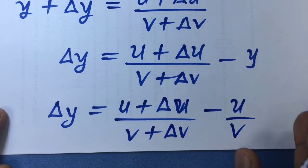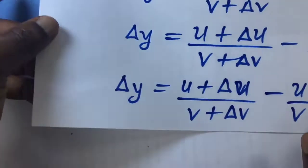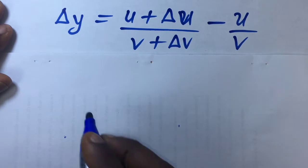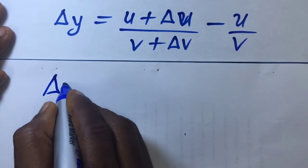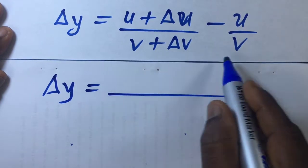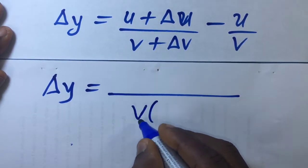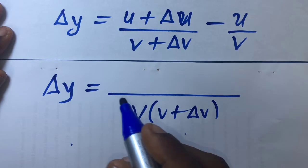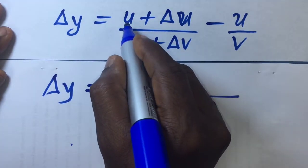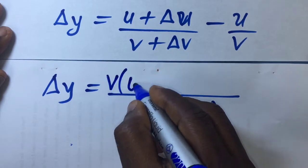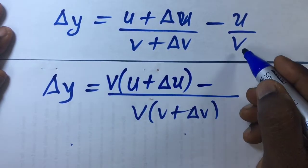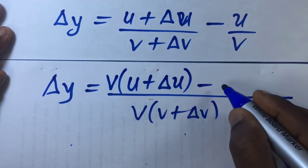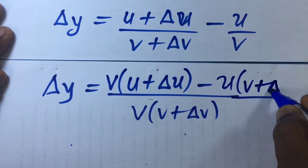The next thing we are going to do is simplify further by taking LCM. The LCM of v and v plus delta v will be v(v + delta v). When v plus delta v goes into this LCM, we are left with v, and v multiplies the numerator u plus delta u. When v goes into the LCM, we are left with v plus delta v, which multiplies u.